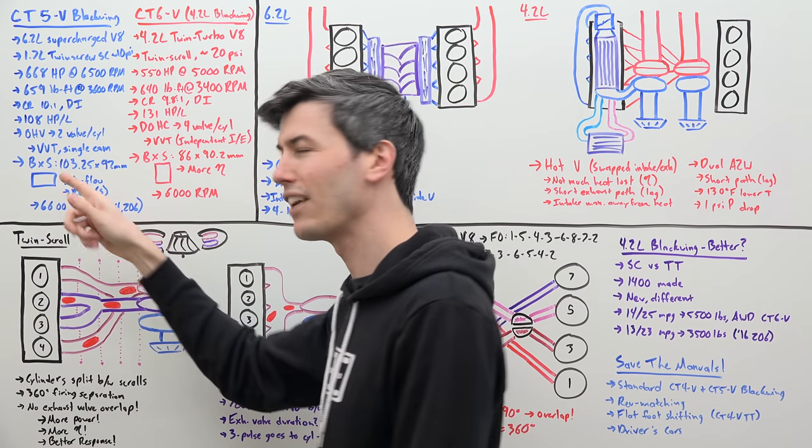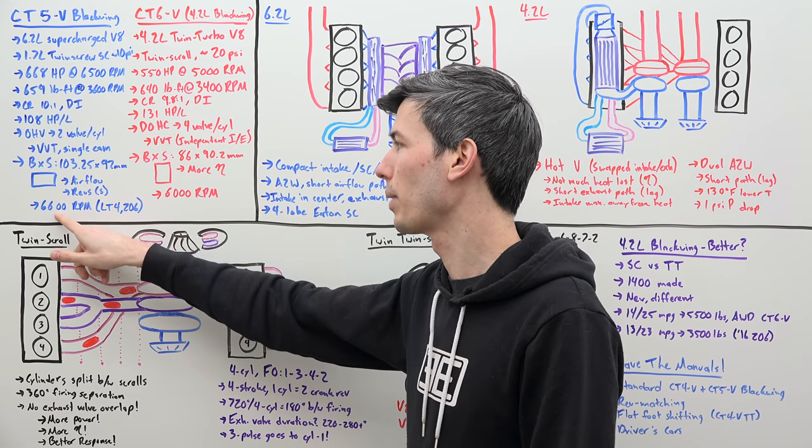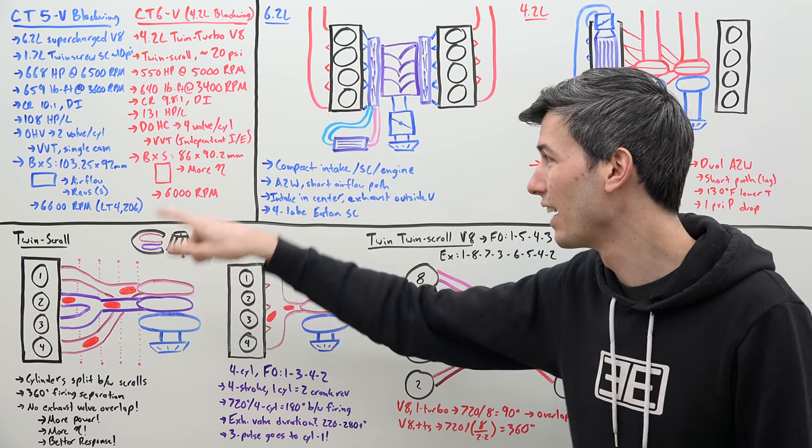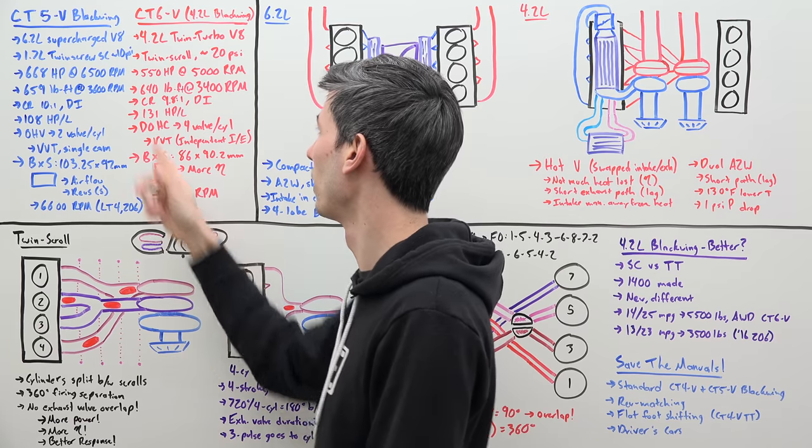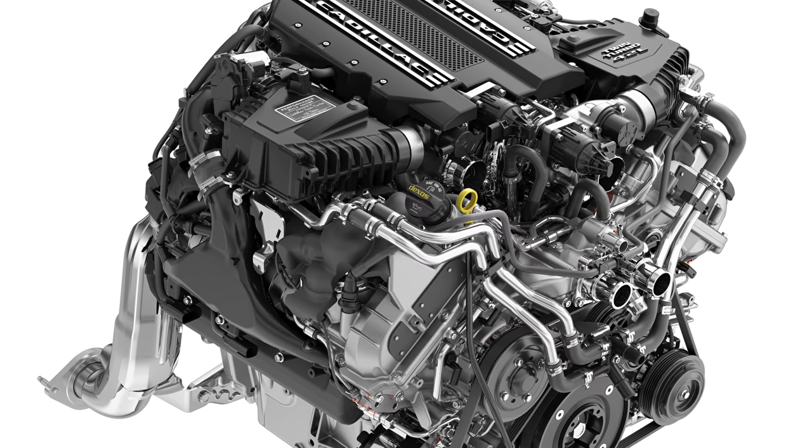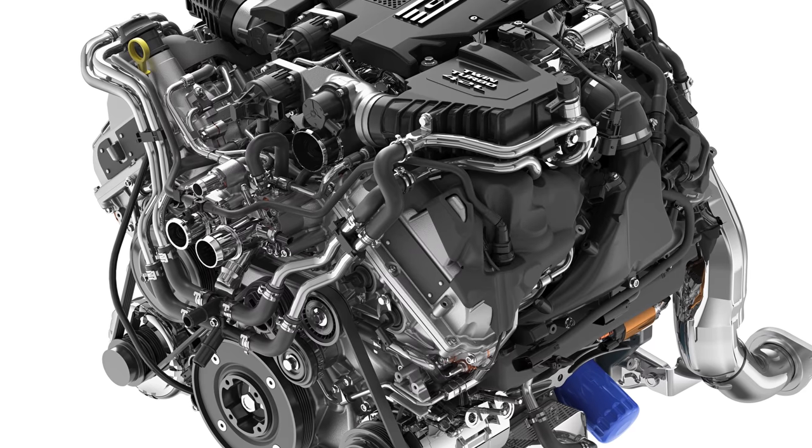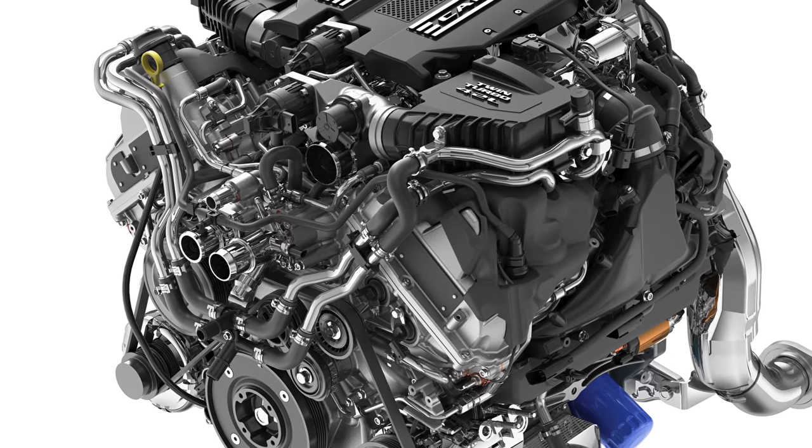Though interestingly, even though this is a pushrod engine, it revs higher. 6,600 rpm was the LT4 in the Z06. It revs higher than 6,000 rpm for that latest and greatest 4.2 liter with the dual overhead cams and four valves per cylinder. So interesting that it was a fairly low revving engine that they put in that new 4.2 liter Blackwing.